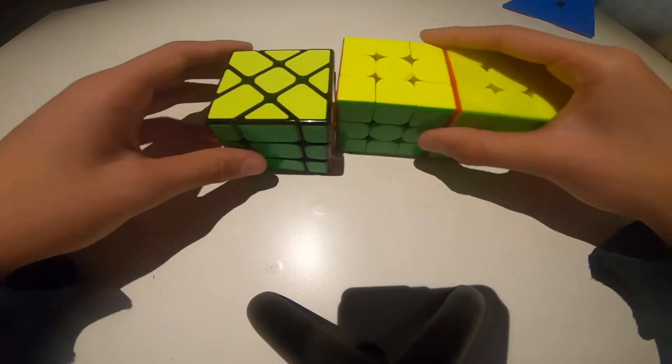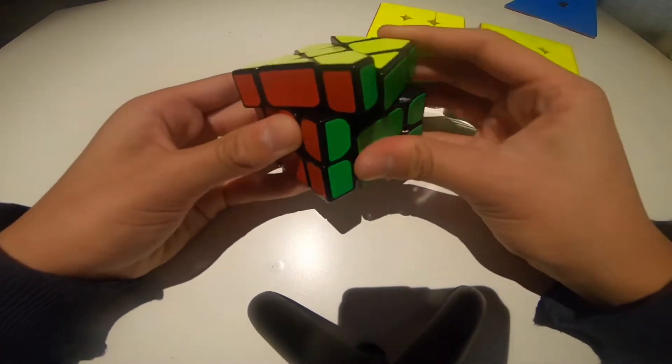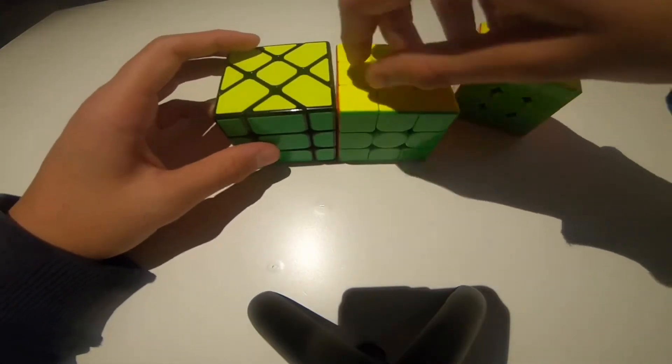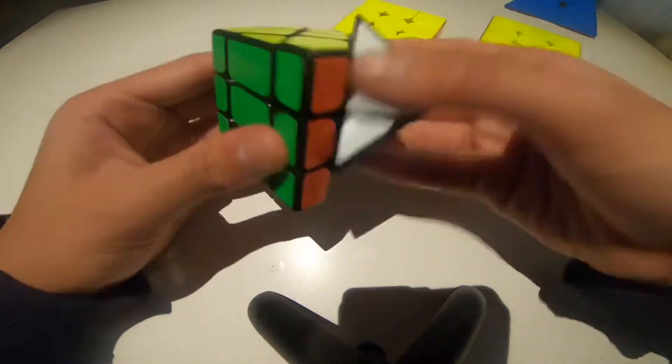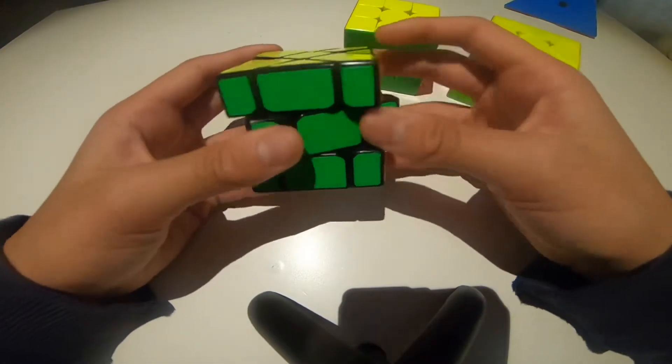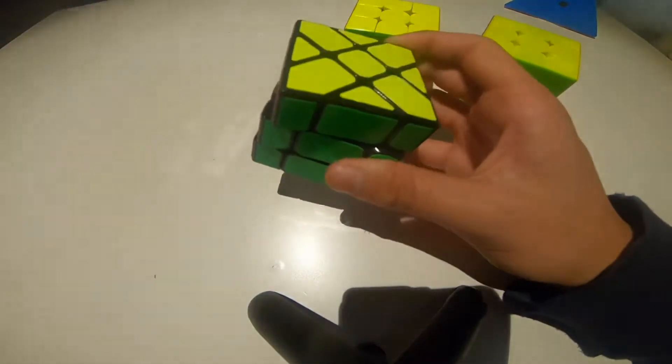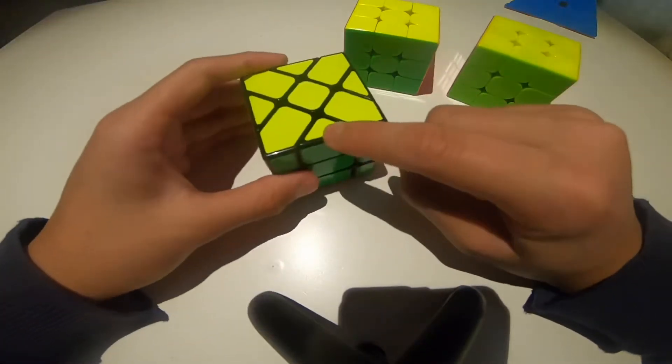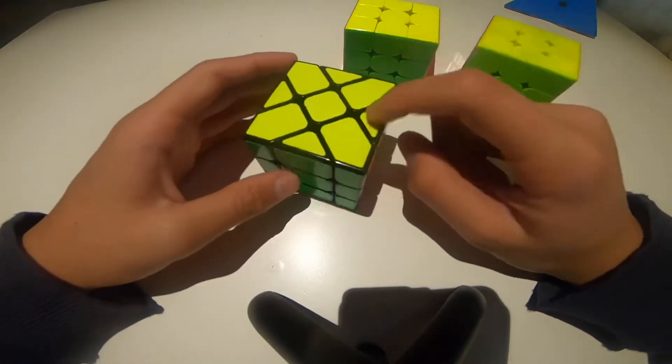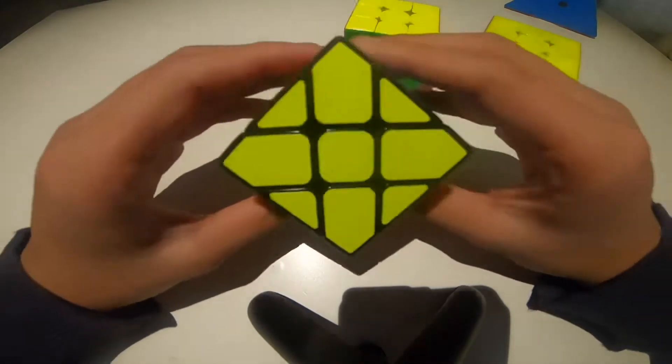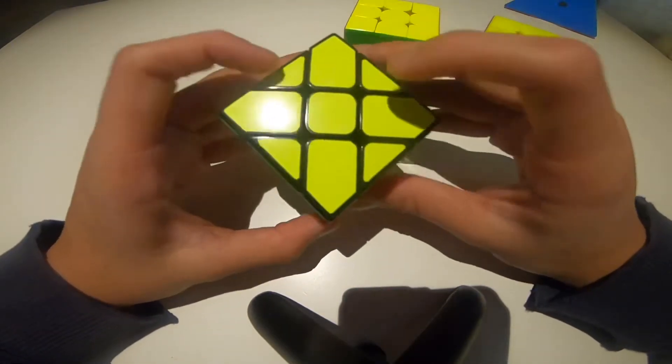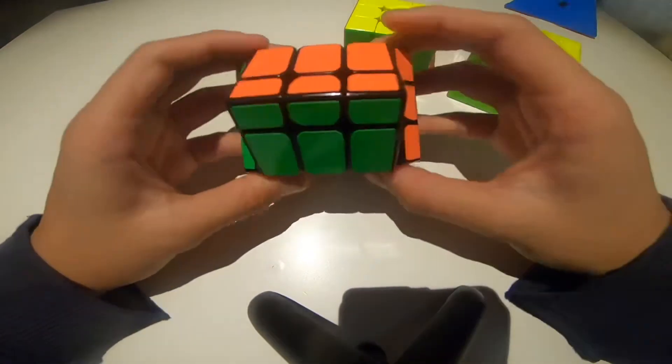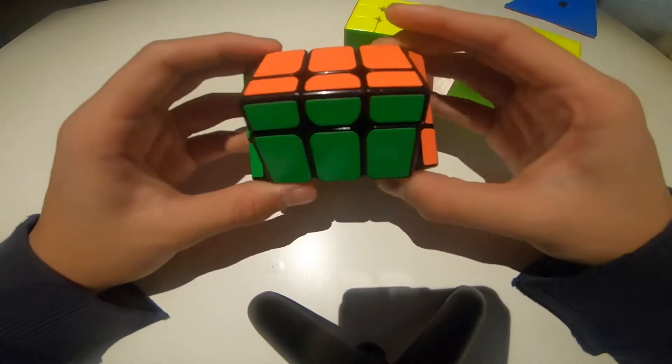For this we need the Fisher cube. Now if you don't know what this is, it's a 3x3 shape mod that kind of twists the axes like 45 degrees. So it turns like this and it basically swaps out some edges for corners. So as you can see this edge is actually a corner. This is an edge, corner, edge. It makes sense if you look at it like this. This is the center, this edge is corner. This is an edge, this is a center.